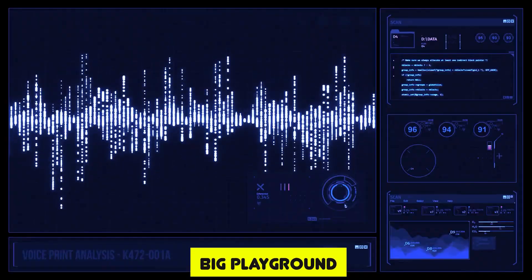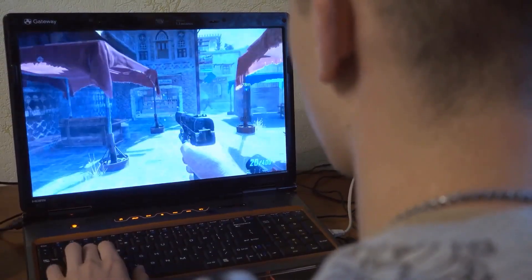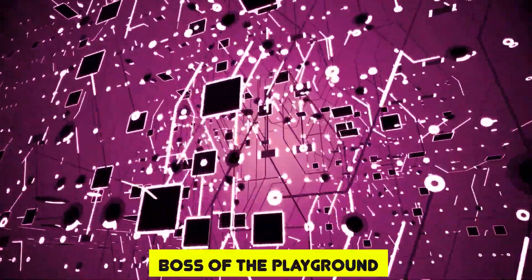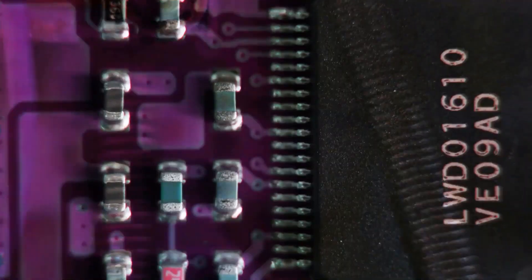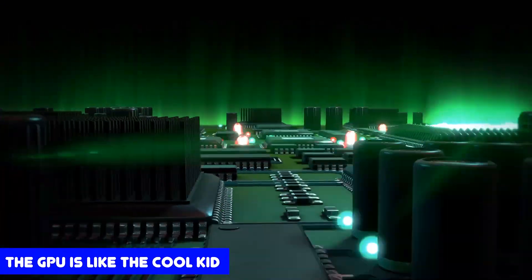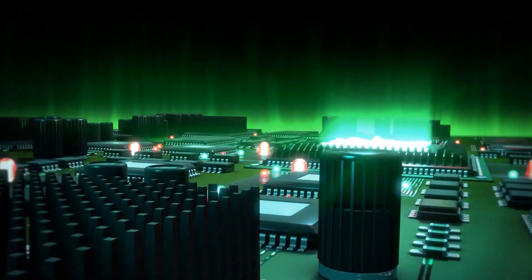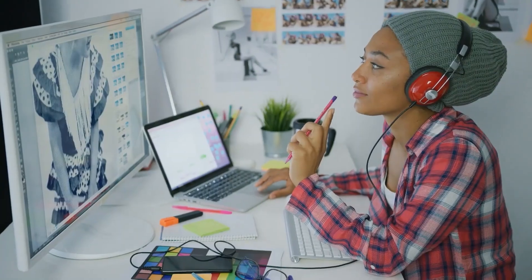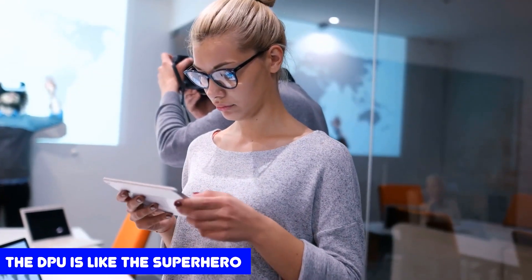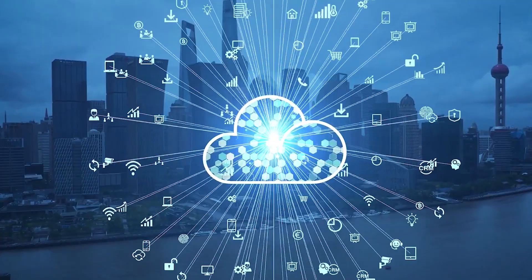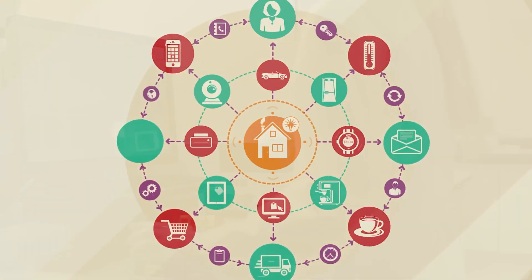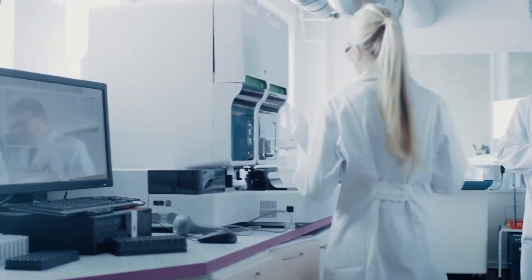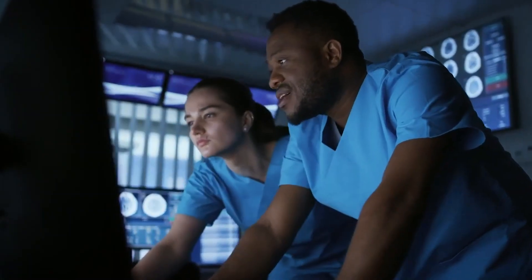Think of your computer as a big playground and the processors as the kids playing on it. The CPU is like the boss of the playground — it makes sure that everything is running smoothly and everyone is following the rules. The GPU is like the cool kid who's really good at drawing and coloring — it's great at making pictures and videos look super cool and colorful. The DPU is like the superhero who has superpowers to help people in emergencies — it's great at processing a lot of information really quickly, like when doctors need to quickly analyze a patient's medical data to make important decisions.